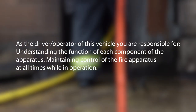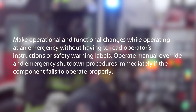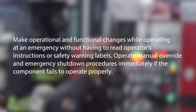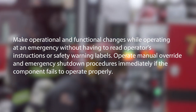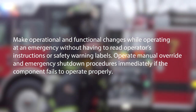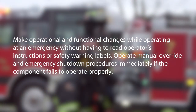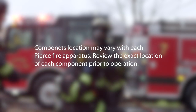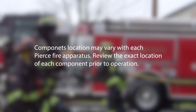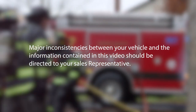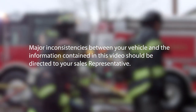Maintaining control of the fire apparatus at all times while in operation. Make operational and functional changes while operating at an emergency without having to read operator's instructions or safety warning labels. Operate manual override and emergency shutdown procedures immediately if a component fails to operate properly. Components location may vary with each fire apparatus. Review the exact location of each component prior to operation. Major inconsistencies between your vehicle and the information contained in this video should be directed to your sales representative.